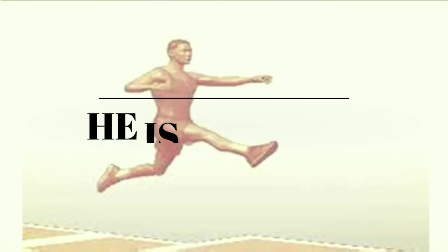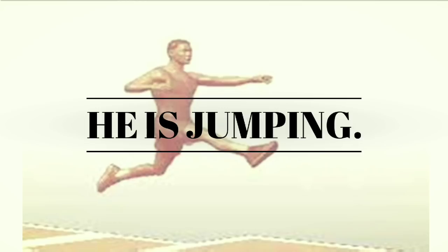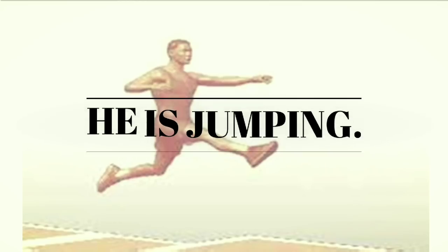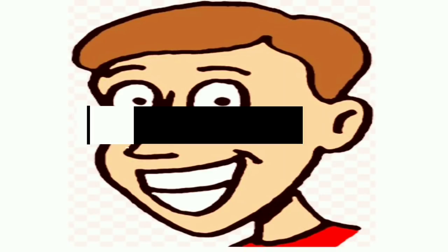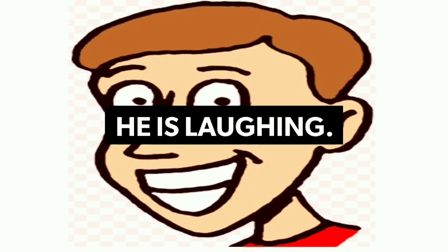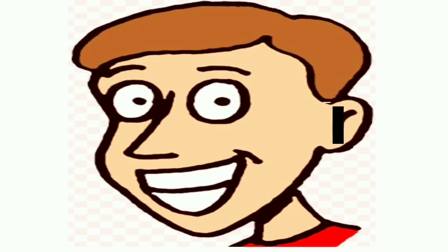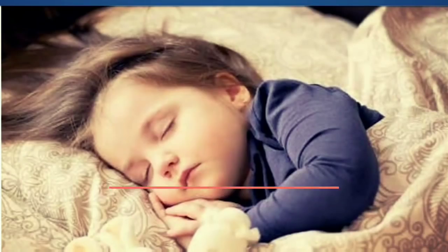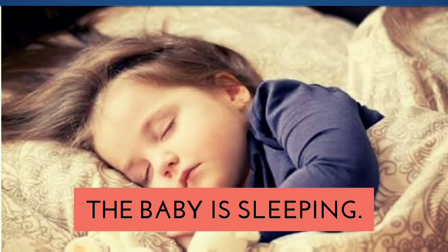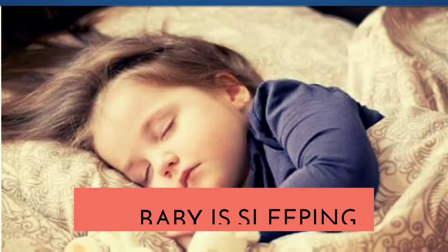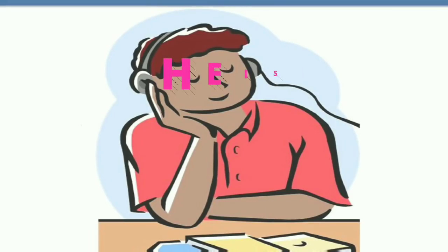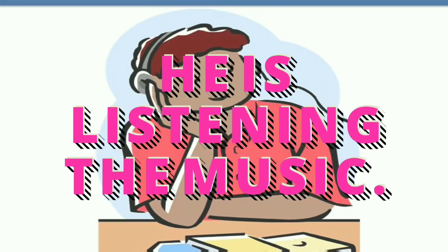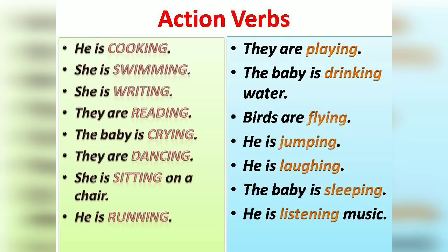What is he doing? He is jumping. Jumping is the action verb. See his action — he is laughing. Laughing is the action verb. See the action of the baby — the baby is sleeping. Sleeping is the action verb. What is he doing? He is listening to music, and listening is the action verb.